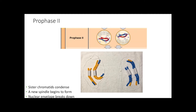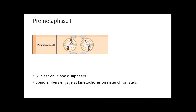Now we move to the second round of cell division and start the cycle all over again with prophase II. In the last round of meiosis I we had built up a nuclear membrane, so in prophase II we are going to start to break down the nuclear membrane again and start to form spindle fibers. In prometaphase II, those spindle fibers are going to attach to the kinetochores — this time attaching to the sister chromatids instead of the homologous chromosomes.